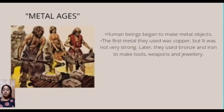The last stage is the Metal Age. Human beings began to make metal objects. The first metal they used was copper, but it was not very strong. Later, they used bronze and iron to make tools, weapons, and jewelry.